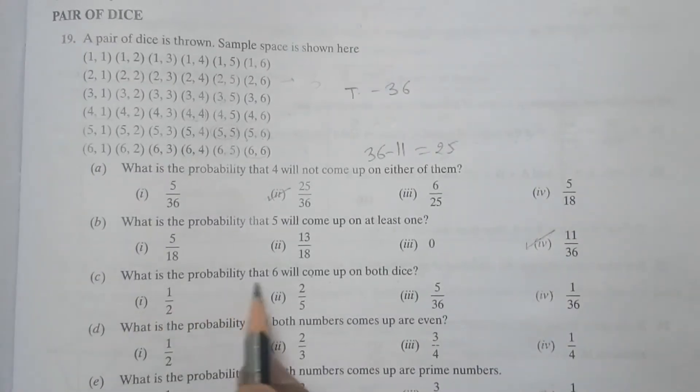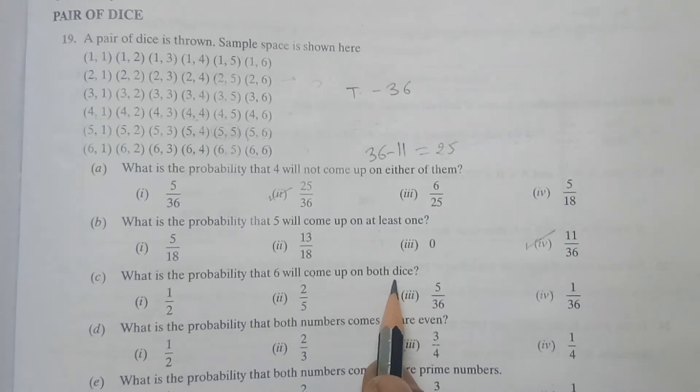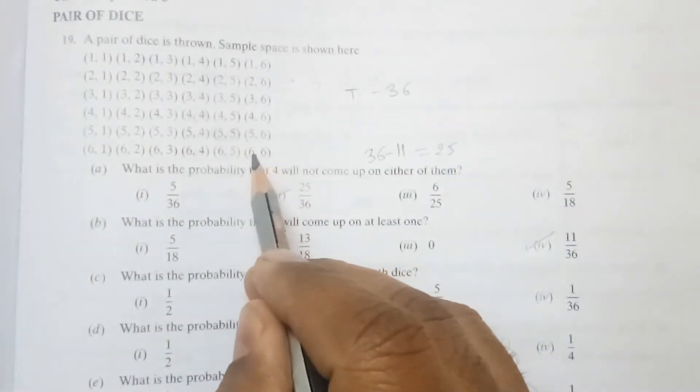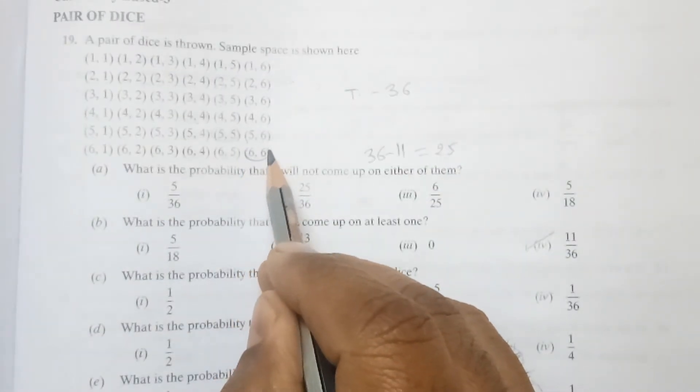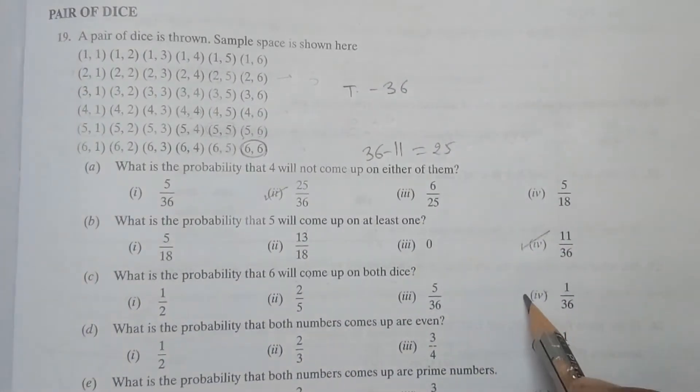Next question is: What is the probability that 6 will come upon both the dice? 6 has to come on both. So there is only one case (6,6) where 6 will come on both, so probability is 1 by 36.